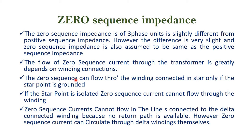The zero sequence current can flow through the winding connected in star only if the star point is grounded. If the star point is not grounded, zero sequence current cannot flow. If the star point is isolated, zero sequence current cannot flow through the winding. Zero sequence current cannot flow in the delta connected winding because no return path is available.